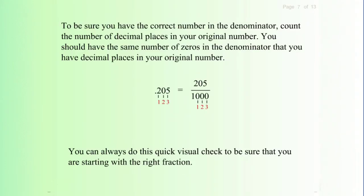To be sure you have the correct number in the denominator, count the number of decimal places in your original number. You should have the same number of zeros in the denominator that you have decimal places in your original number. You can always do this quick visual check to be sure that you are starting with the right fraction.